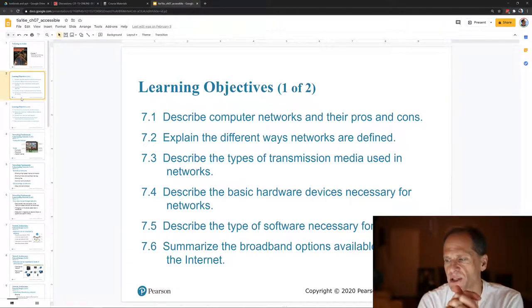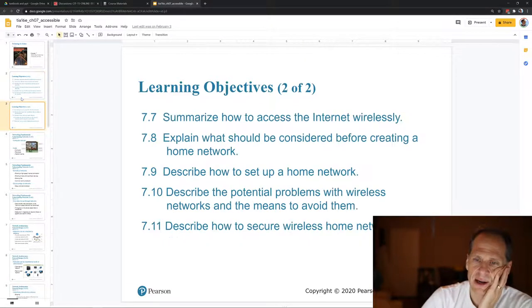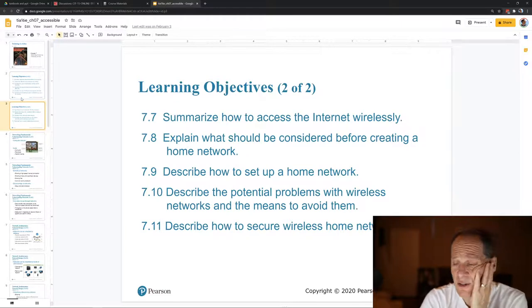Describe the types of transmission media used in networks. So transmission media used in networks. We'll see what the textbook says about that. Hardware devices like routers and different types of cables. Describe the type of software. So there's different software for networks. We'll look at a little bit of that in this chapter. Summarize the broadband options available to access the Internet on a broadband narrowband, ISPs, Internet service providers.